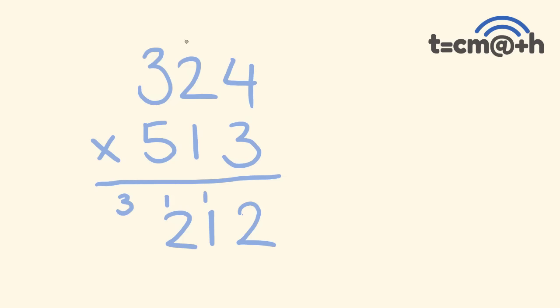For the thousands part, we have 2 times 5 which is 10, and 3 times 1 which is 3. 10 plus 3 is 13, plus that carried 3 gives us 16 — put the 6 here and carry the 1. Finally, we have 3 times 5 which is 15, plus that carried 1 which is 16 — put that whole thing down. We have 166,212. What a cool trick — really, really simple.